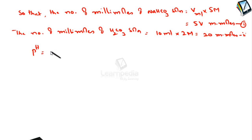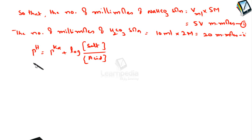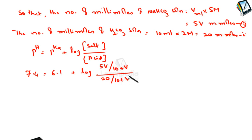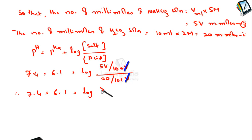Using Henderson's equation: pH = pKa + log([salt]/[acid]). The pH is 7.4 and pKa is 6.1. So: 7.4 = 6.1 + log of (5V millimoles / (V + 10) total volume) divided by (20 millimoles / (10 + V) total volume). Since total volume appears in both numerator and denominator, it cancels, giving 7.4 = 6.1 + log(5V / 20), which simplifies to log(V/4).